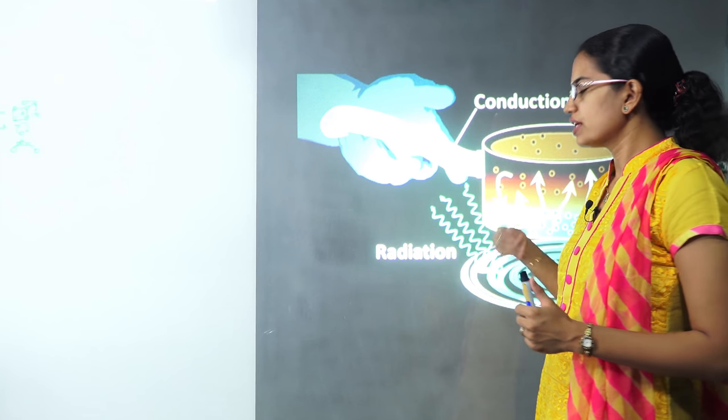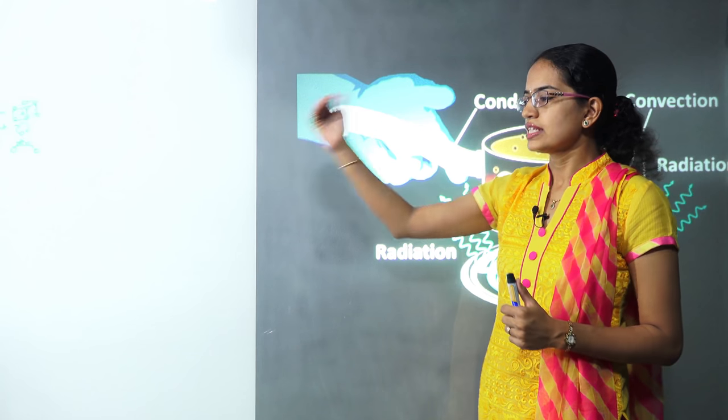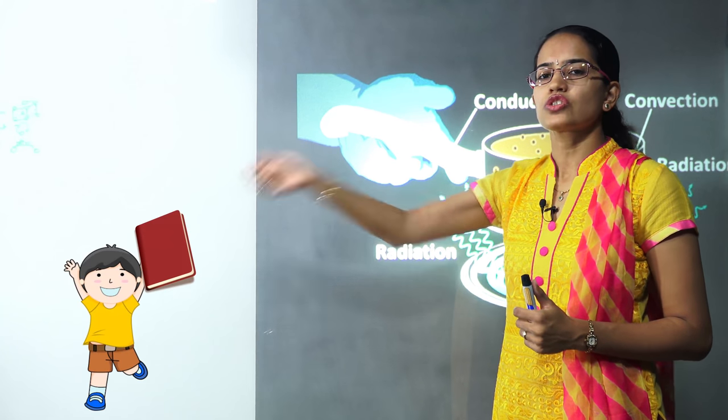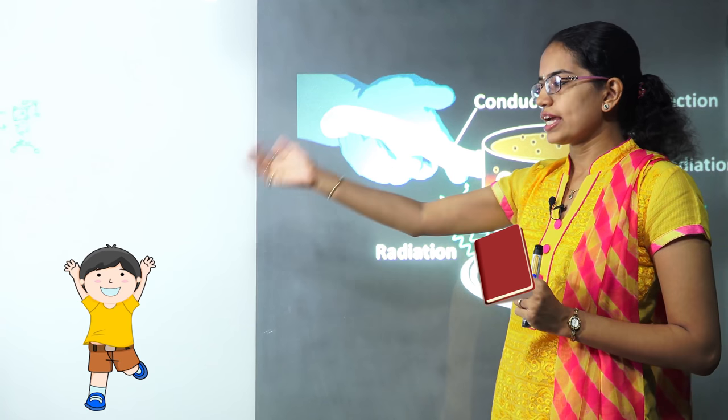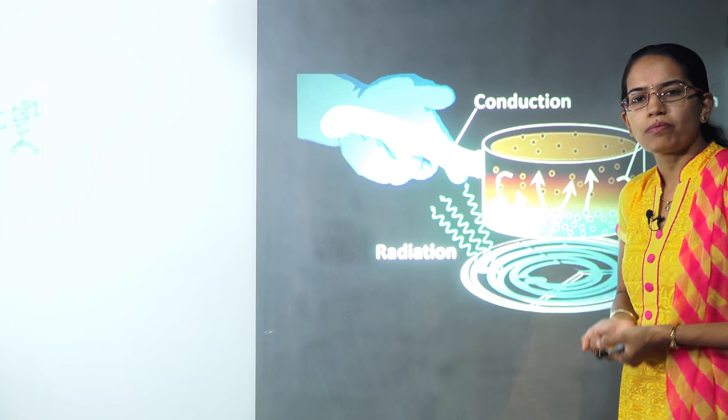The next is the process of radiation. Under the process of radiation, what happens is the child sitting at the back would just throw the book and I'll have to catch it. The energy is being emitted from one photon and being absorbed by the other.